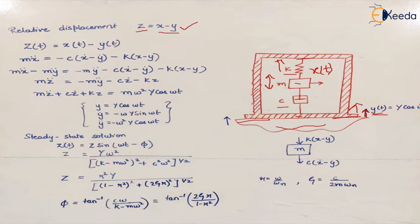If we draw the free body diagram of the mass, we can identify the spring force and the damping force acting on it. The damping force is c(ẋ − ẏ) because relative velocity is present, and the spring force is k(x − y) because relative displacement is present.